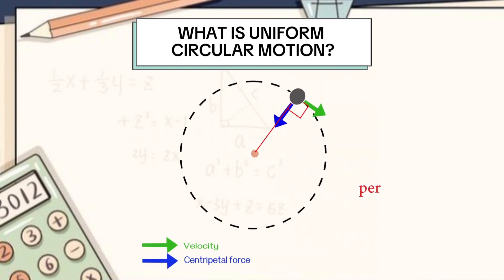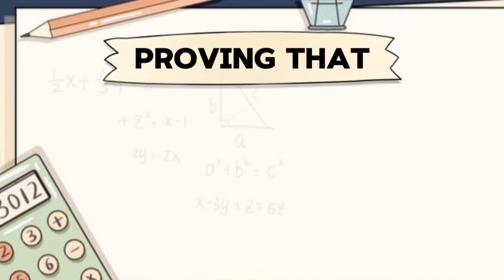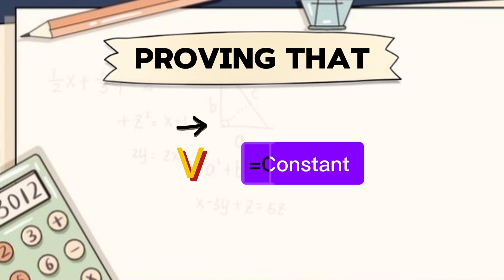Point to be noted here is centripetal force acts perpendicular to velocity of object. What is the topic of discussion today then? Today we are going to prove that in Uniform Circular Motion, the magnitude of velocity remains constant.